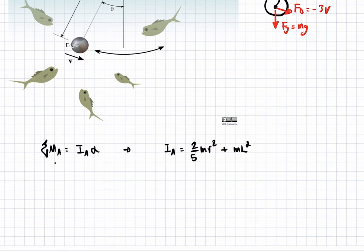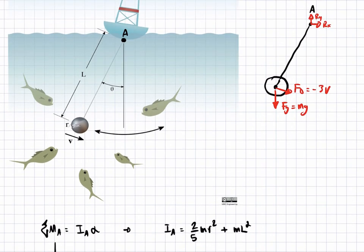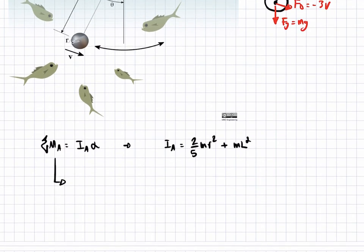Now we can actually take the sum of moments. So we're going to assume that this is our coordinate system: x, y, and a positive rotation is counterclockwise. So we will take the sum of moments with the following convention. So we have that negative 3 V times the length minus mg times the length times sine theta is equal to I, which is 2 fifths m r squared plus m l squared times alpha, right? So this is just I, I just plugged it in, times alpha.